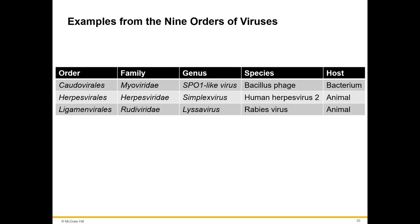Here's an example of a classification system. Herpesvirales is the order, Herpesviridae is the family, Simplexvirus is the genus, and the species is Human Herpesvirus 2. The host for this one is an animal.